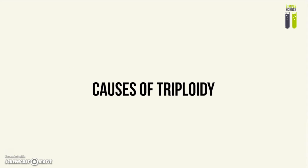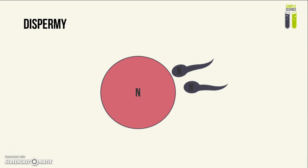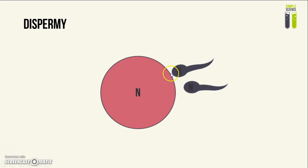Now I want to consider the causes of triploidy. The first cause is dispermia, which is when an ovum containing one set of chromosomes is fertilized by two sperm cells, each containing one set of chromosomes. When these three cells fuse together to form the zygote, the zygote will have three sets of chromosomes.